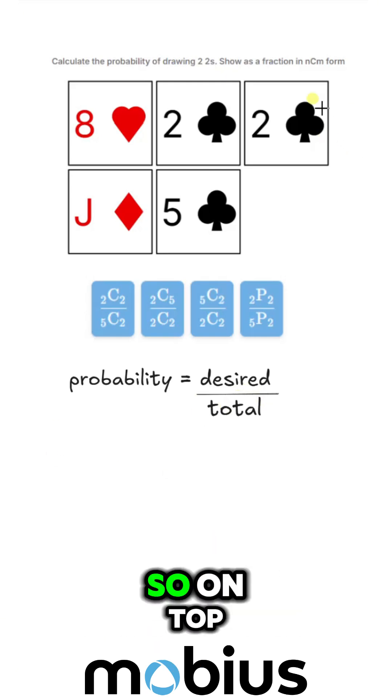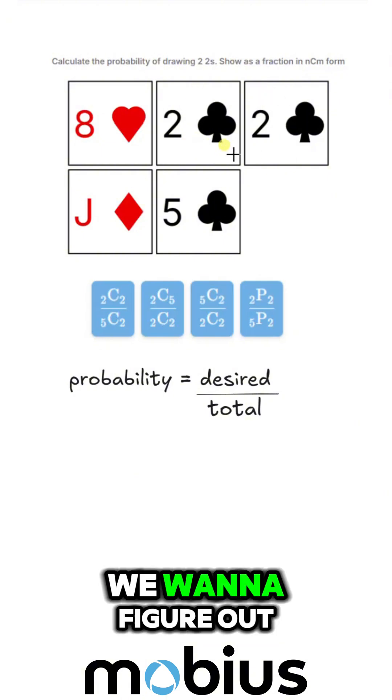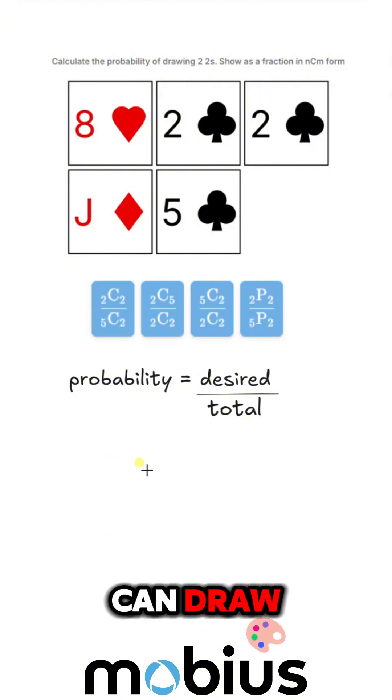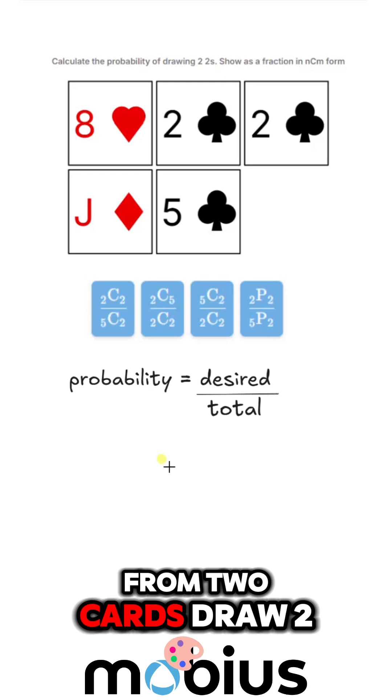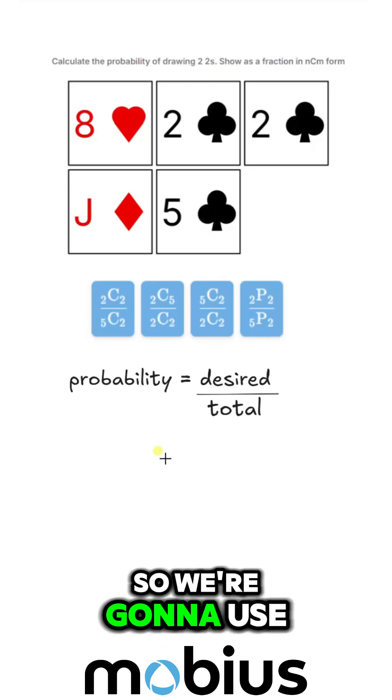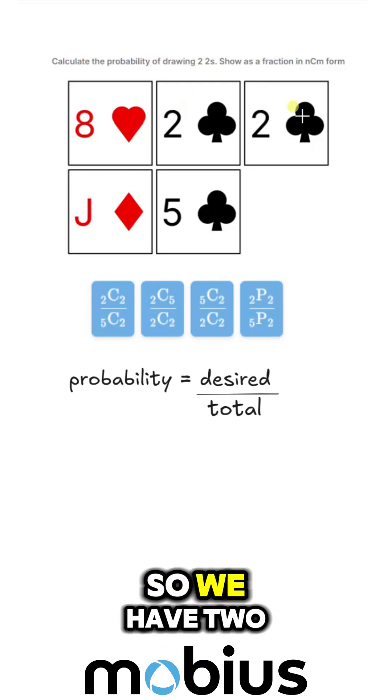We're going to draw two cards. On top, we want to figure out how many ways we can draw two from two cards. We're going to use a different notation here. So we have two cards.